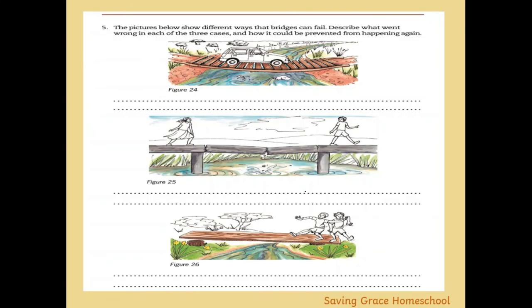Each of three images shows different ways bridges can fail. In the first figure, a very heavy car goes over what is essentially just a beam used as a bridge with no reinforcements or suspending cables. The most likely outcome: the beam snaps in the middle, the car gets stuck in the river, and the bridge is broken. To prevent this, you could support it from underneath or use a suspension bridge design with support from the top.